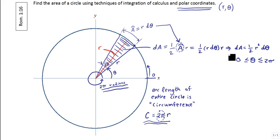So, if I were to now integrate both sides of this, I'm going to get A on the left hand side is equal to the integral of one half r squared d theta, where theta ranges between zero and two pi.